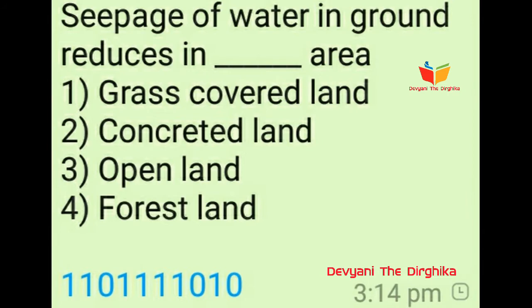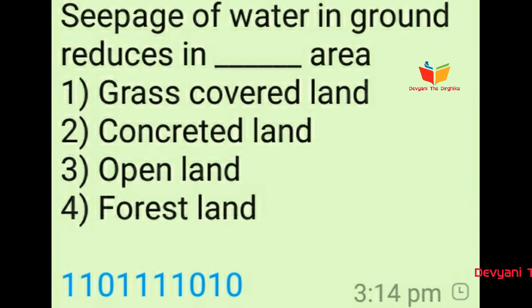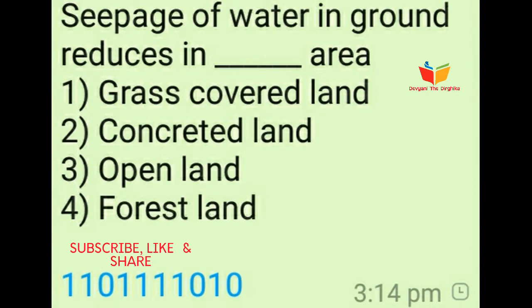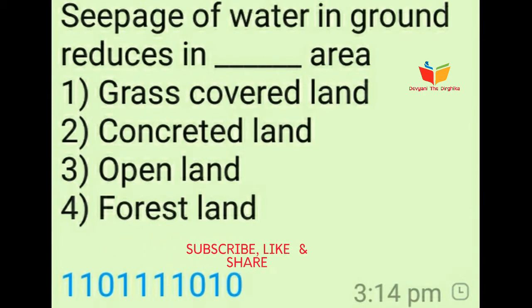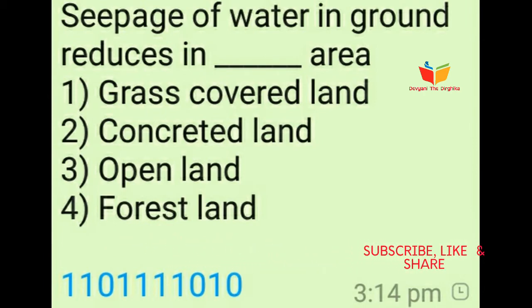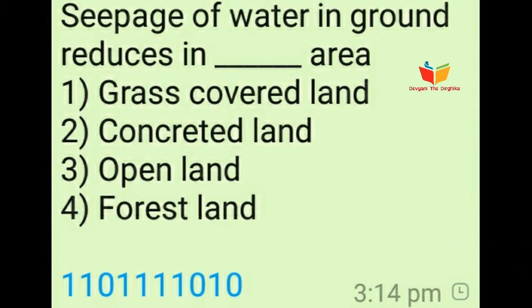Question number two: Seepage of water in ground reduces in dash-dash area. Option number one is grass covered land, option number two is concreted land, option number three is open land, and option number four is forest land. The answer of this question is option number two, means concreted land.